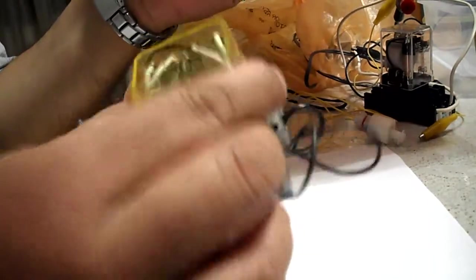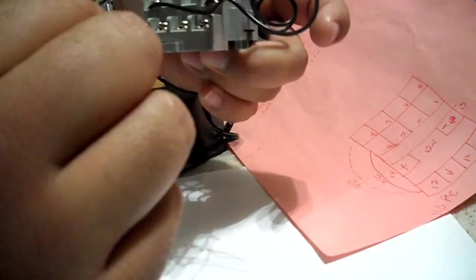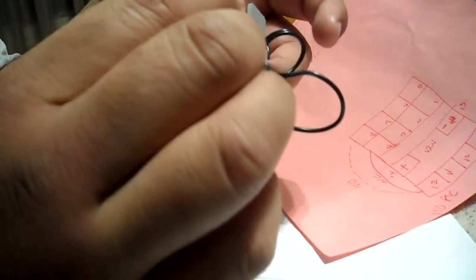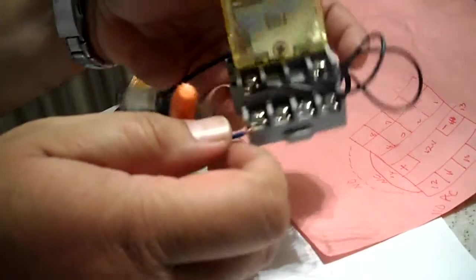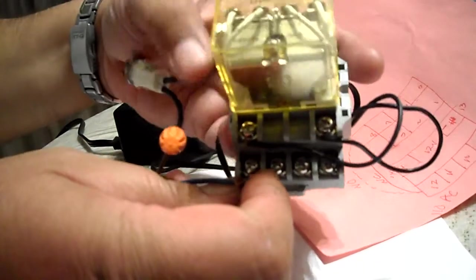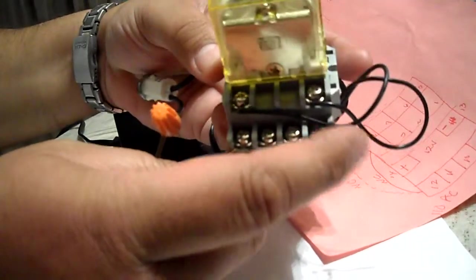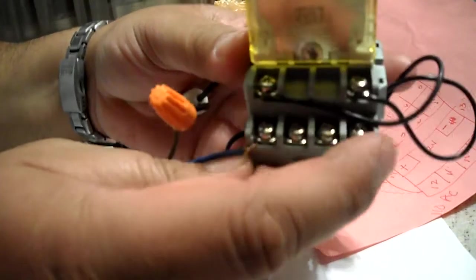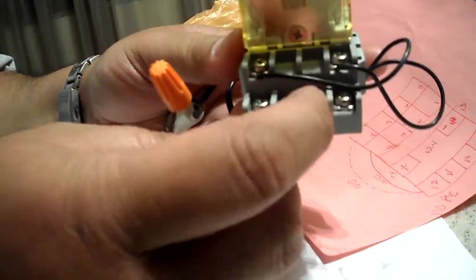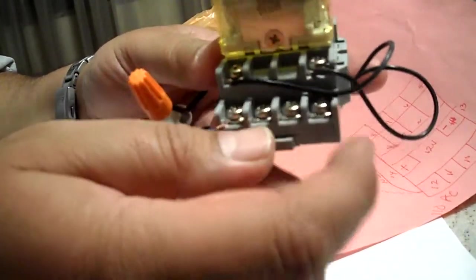So this base, the relay sometimes doesn't come with it, but if you can buy it with the base it'd be awesome because you can just screw everything on and then everything is good to go. You can see there's just screws on here. I'm not going to try to make it focus, but on each tab here for every screw it has a number.